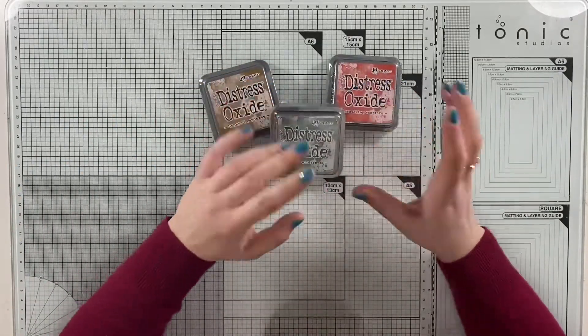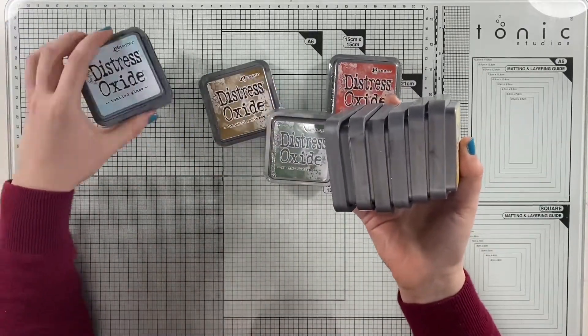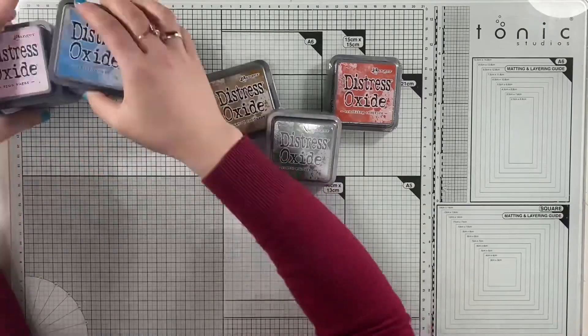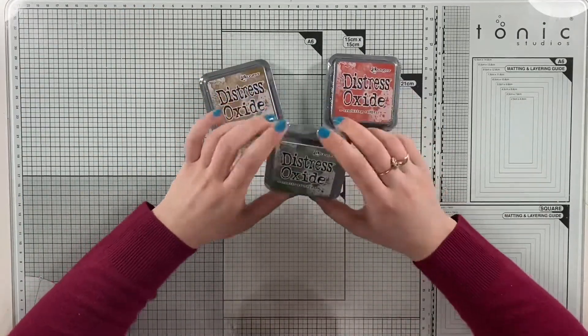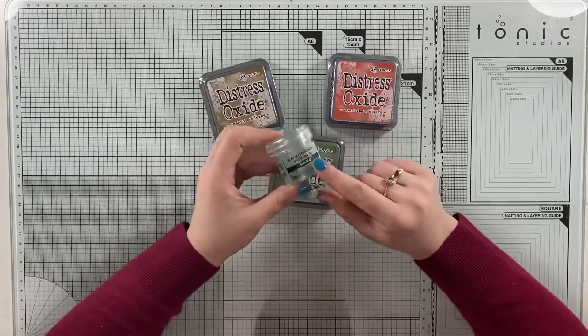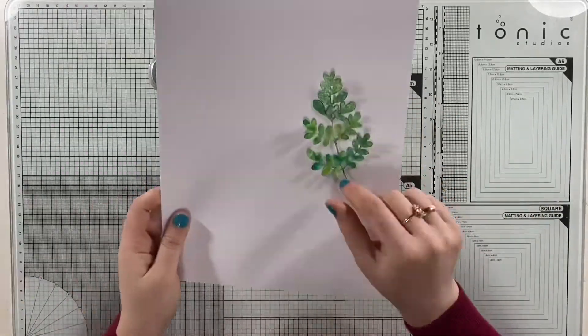They had this 15% off on their oxide inks, so I just thought I would treat myself with three new colors just to help me build my stash. I chose this Wild Rustic Wilderness which is a new color, Crackling Campfire, and Brushed Corduroy.